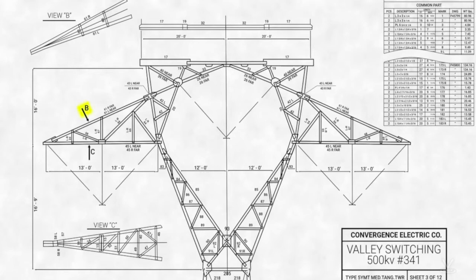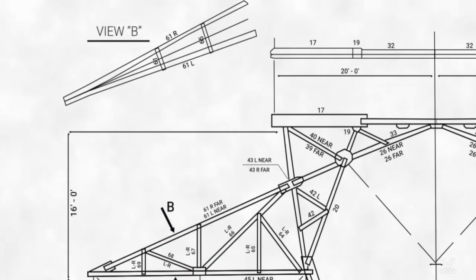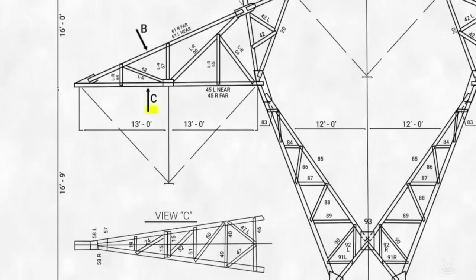For example, the arrow labeled B in this diagram points to the side of the cross arm closest to the top of the page. Above the cross arm drawing is a separate drawing labeled View B. This view shows what the cross arm would look like if viewed from the angle indicated by arrow B. Arrow C points to the side of the cross arm closest to the bottom of the page. View C shows what the cross arm looks like from angle C.